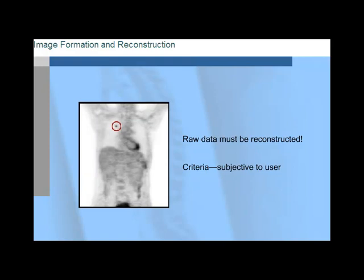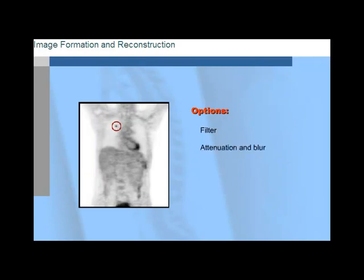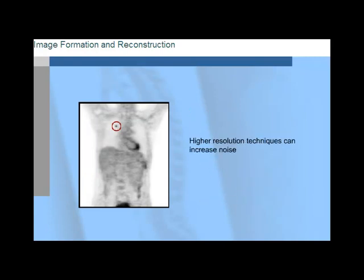Multiple factors influence which iterative reconstruction algorithm, or IR, to employ in PET imaging. Reconstruction options include choice of filter, attenuation and blur, weighting, comparison by ratio and difference, and the number of iterations. While sharper filters and larger numbers of iterations offer higher resolution images, they also increase noise. Smoother filters reduce the noise level, but then the image resolution isn't as high.